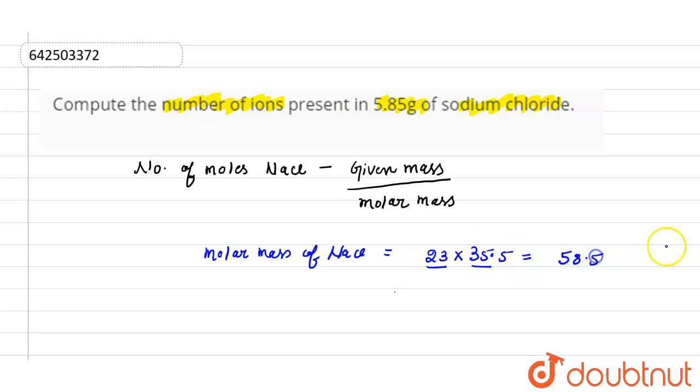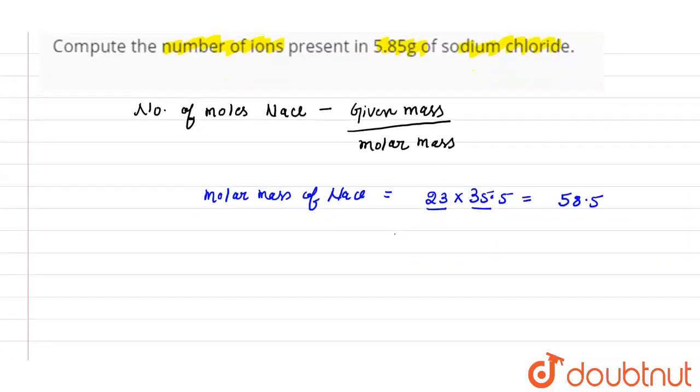So this is the molar mass of NaCl. Let's put it in the formula. Given mass is 5.85, which is given, and the molar mass is 58.5.